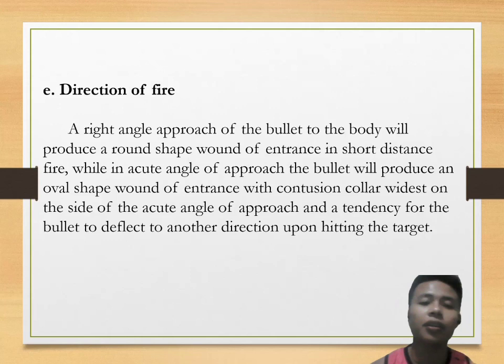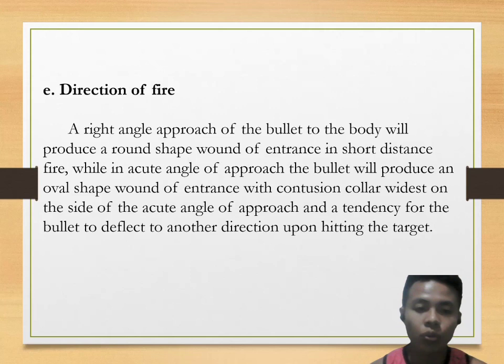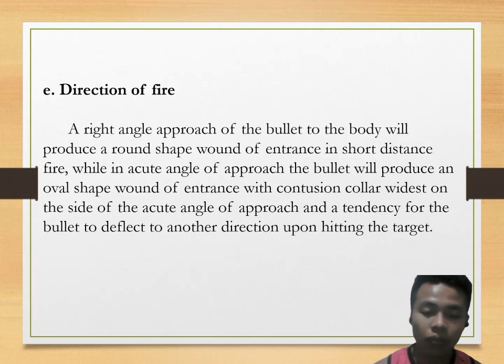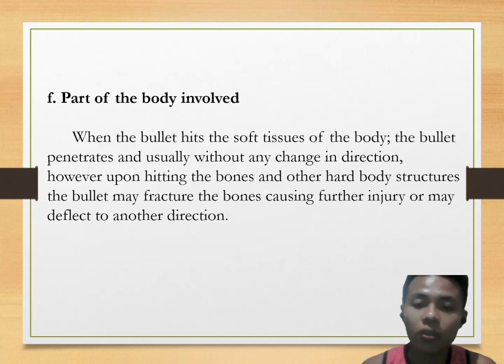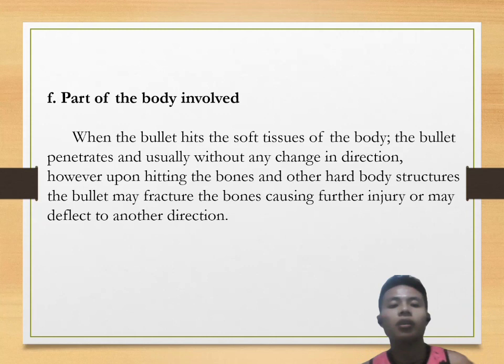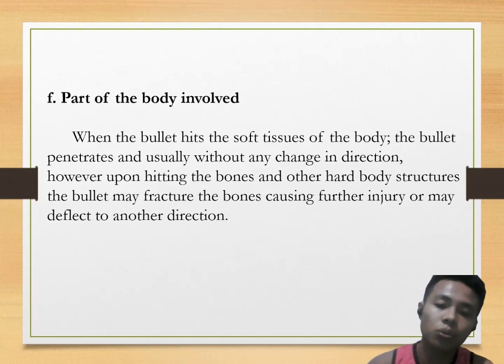Direction of fire: a right-angle approach of the bullet to the body will produce a round-shaped wound of entrance in short-distance fire, while an acute angle of approach produces an oval-shaped wound of entrance with contusion color widest on the side of the acute angle, with a tendency for the bullet to deflect upon hitting the target. Part of the body involved: when the bullet hits soft tissues, it usually penetrates without any change in direction; however, upon hitting bones or other hard structures, the bullet may fracture the bones causing further injury or may deflect to another direction.